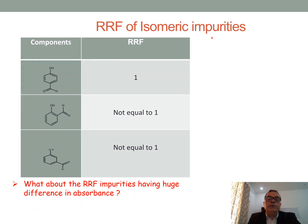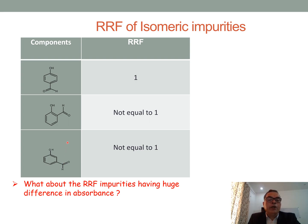RRF of isomeric impurities: it is assumed that isomeric impurities may have the same RRF. However, in some cases it has been observed that isomeric impurities have different RRF values. The reason is that isomeric impurities may have different UV spectra. For example, in the case of para-hydroxybenzoic acid, its isomeric impurities — ortho-hydroxybenzoic acid and meta-hydroxybenzoic acid — may not have the same RRF, because each has a different UV spectrum.